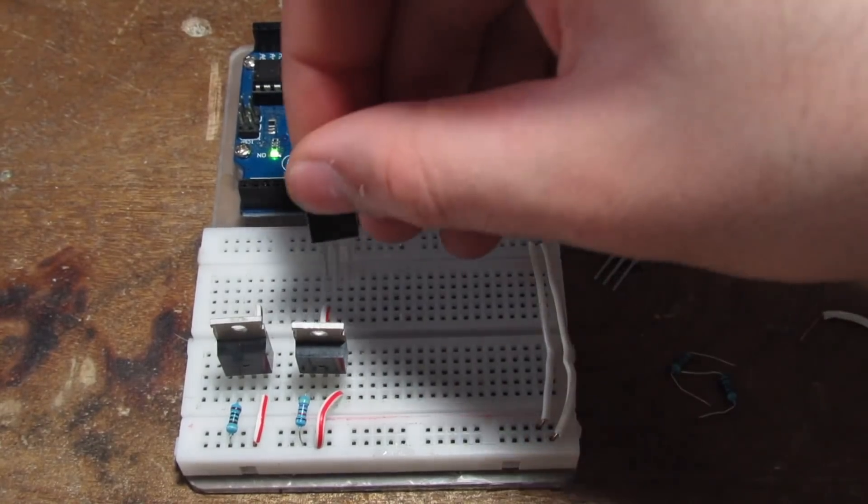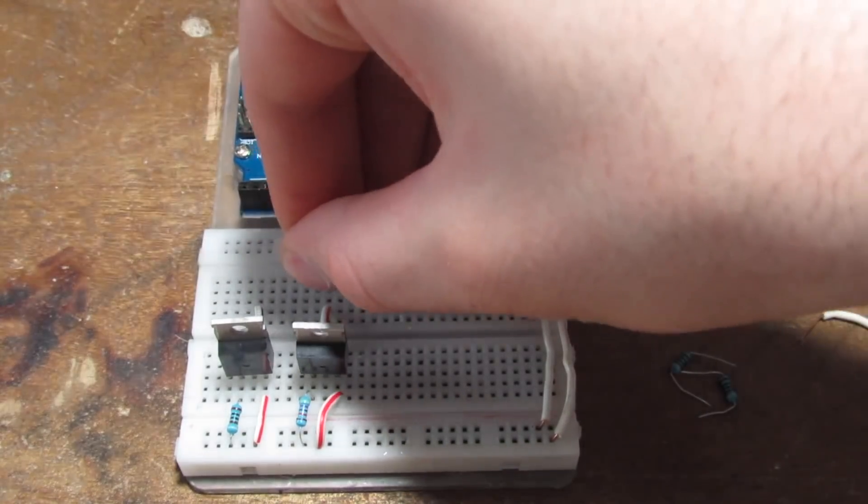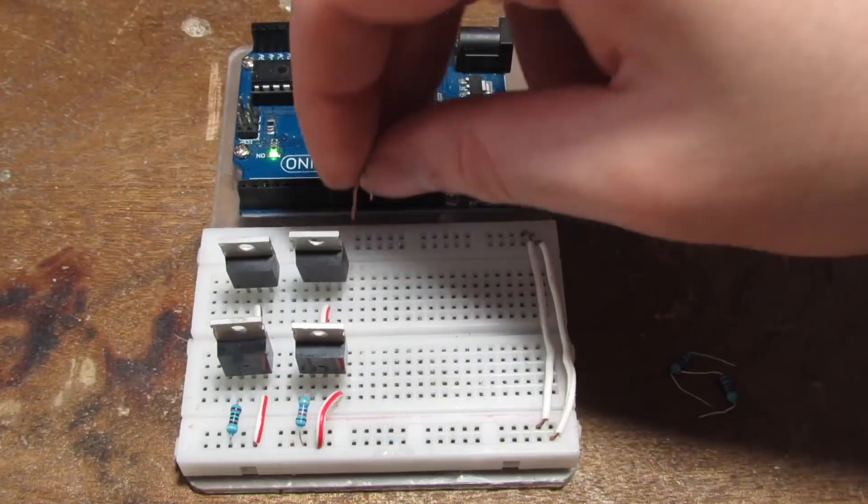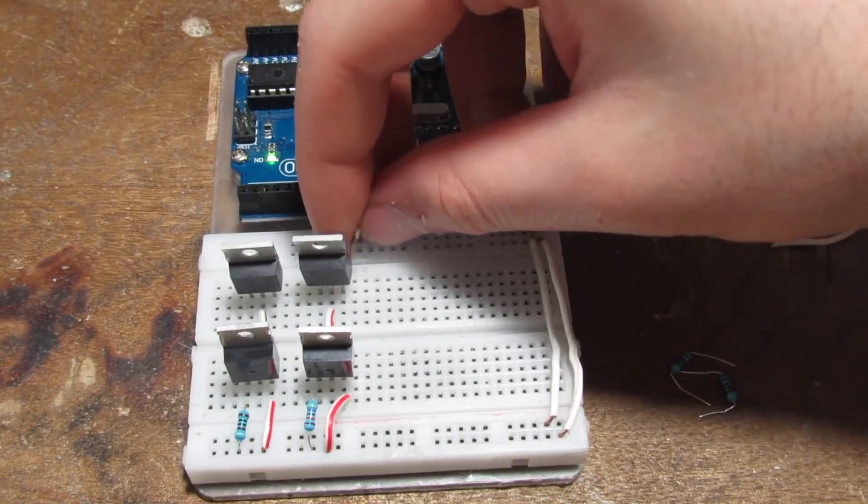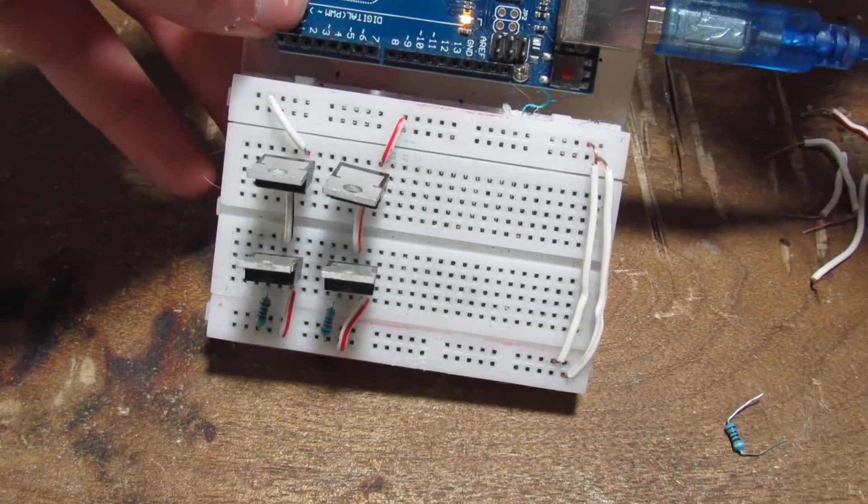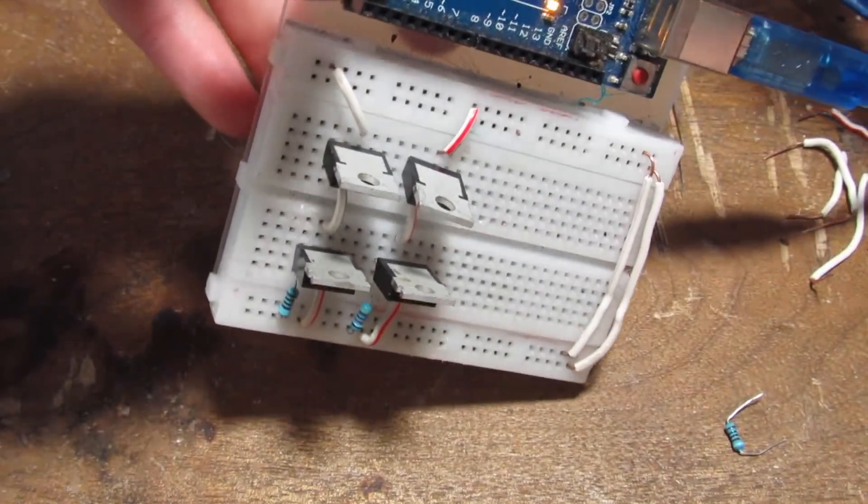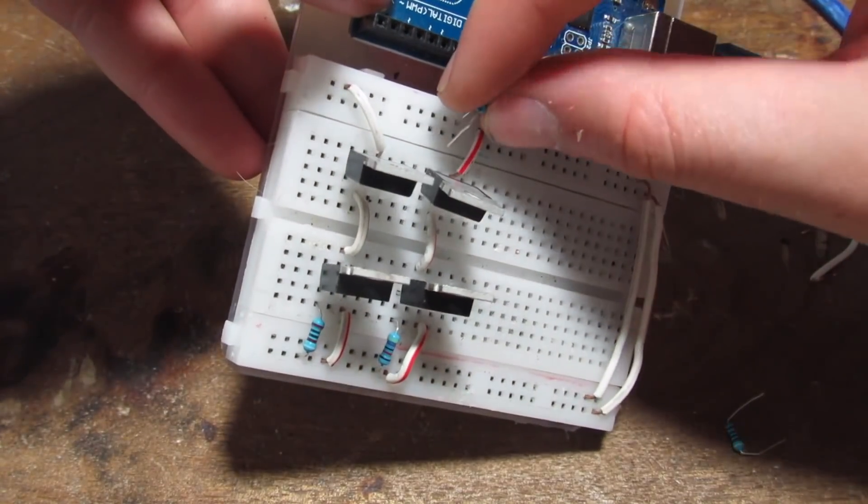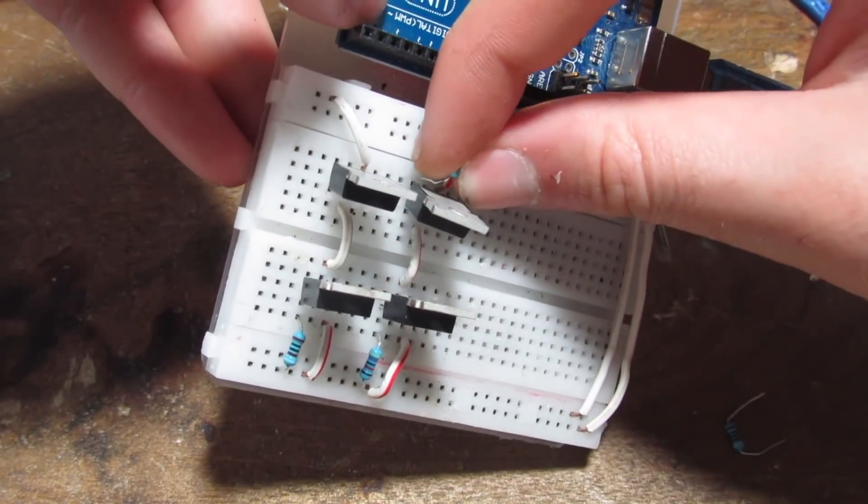So now for the P channels. The pin out for the P channels are the same, but this time the source gets the positive 5 volts. And instead of the gate getting a 10k resistor to negative, the P channels are going to get a 10k resistor going to positive.